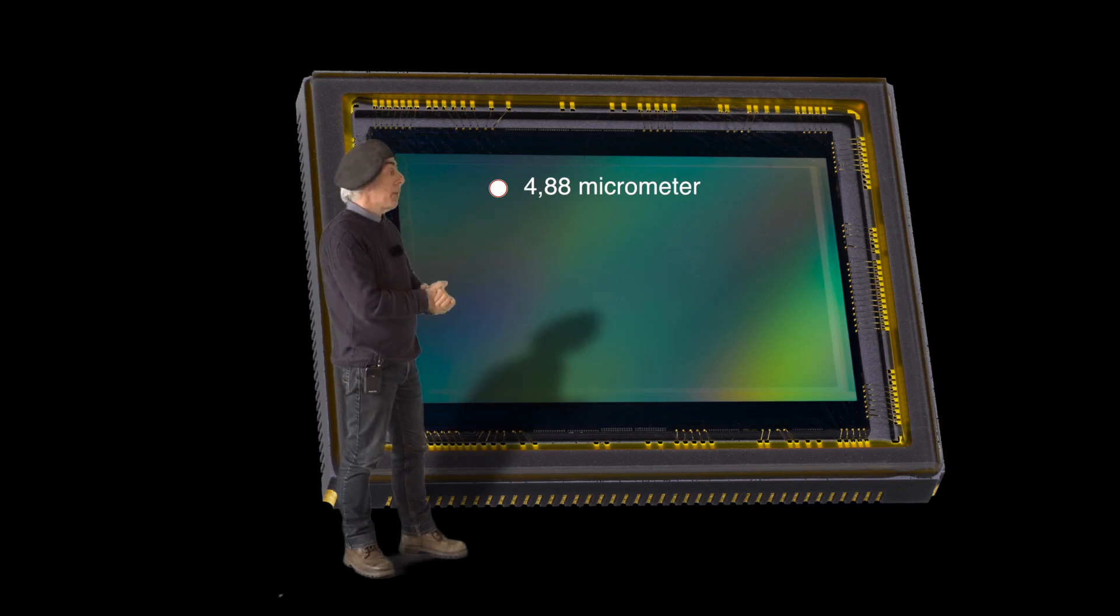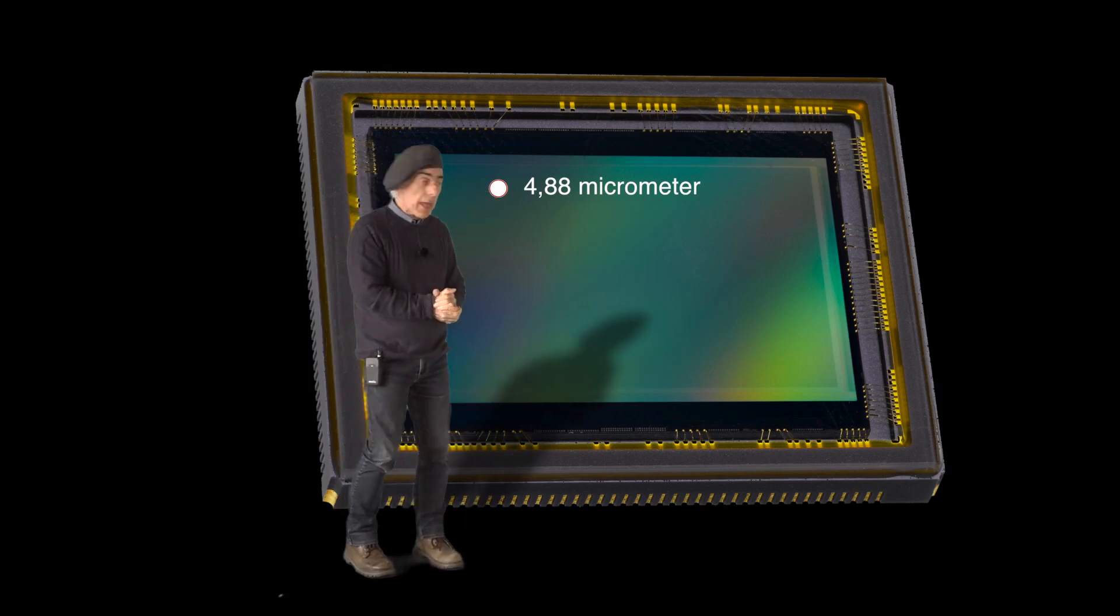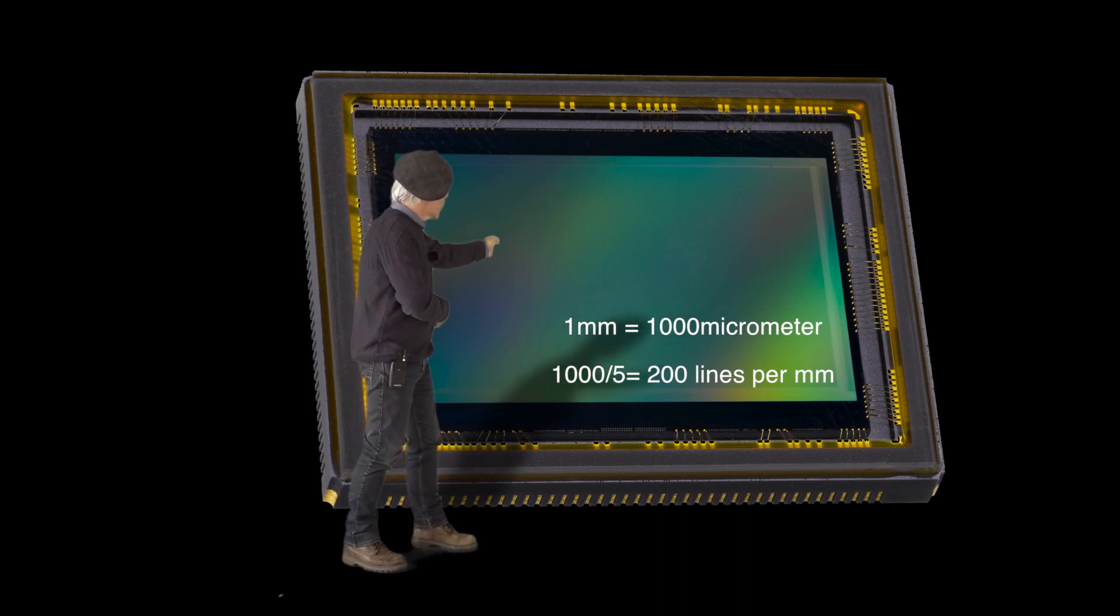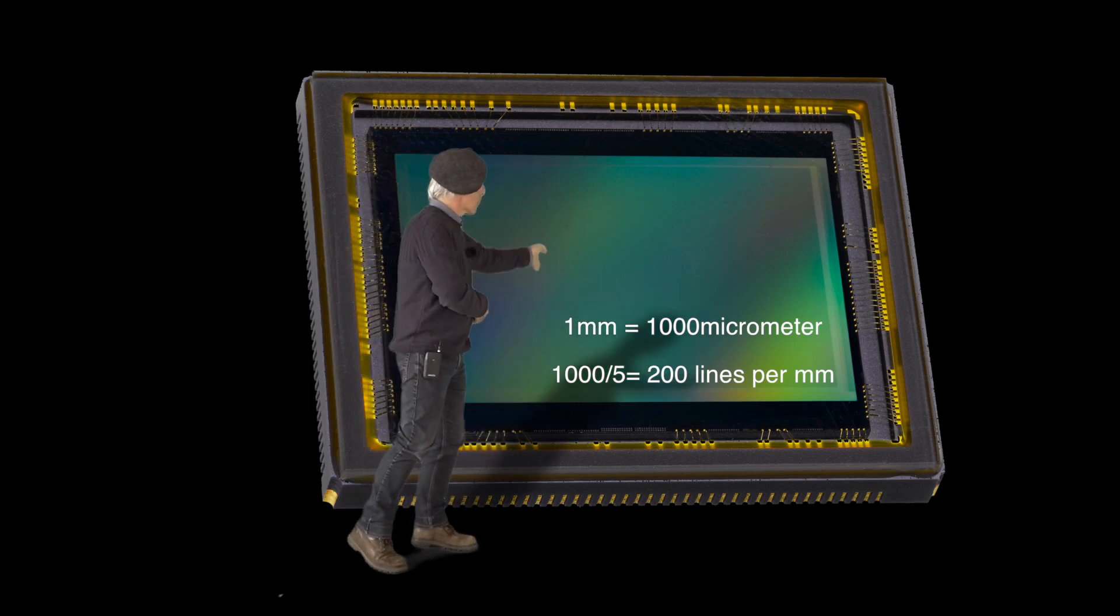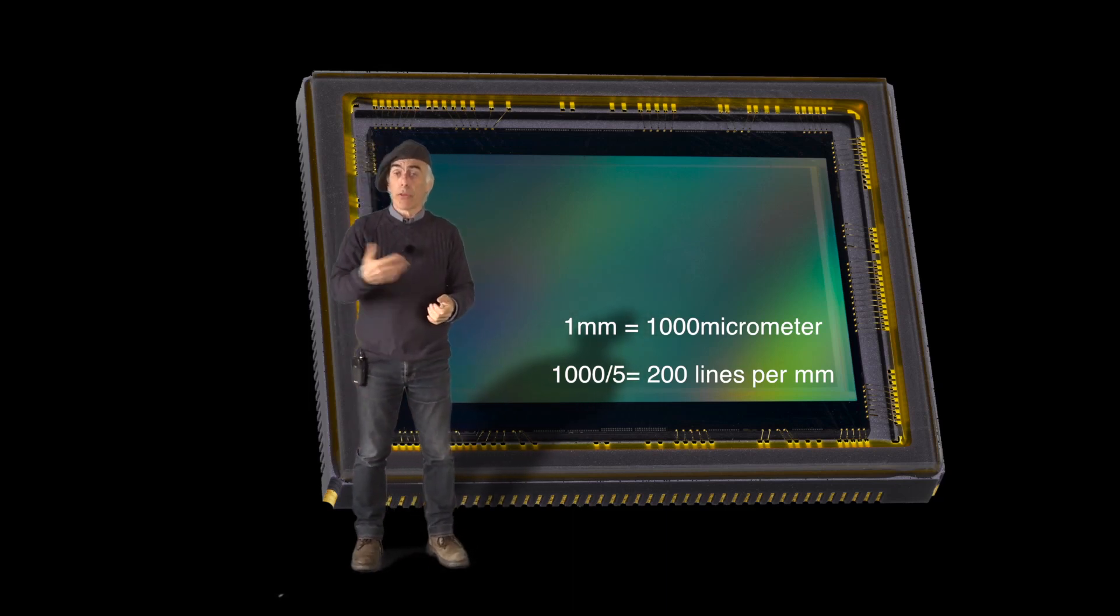That means we could actually have 200 lines or pixels per millimeter, right? So 5 micrometer times 200 is a thousand micrometer, makes it one millimeter. Good, that's easy.